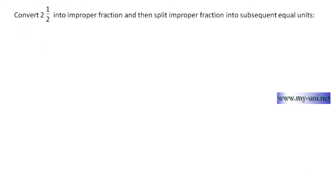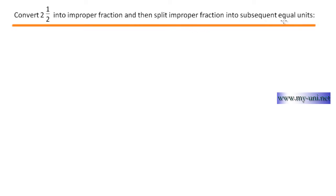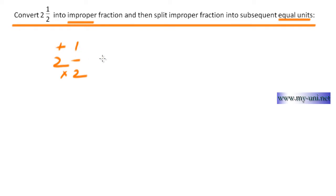Convert two and a half into an improper fraction, and then split the improper fraction into subsequent equal units. So we have a mixed fraction, two and a half, and we have to convert it into an improper fraction, which is really simple. The rule is to multiply the denominator by the whole number, and then add that answer to the numerator. So two times two is four, four plus one is five, and the denominator remains the same. So five halves is five over two.